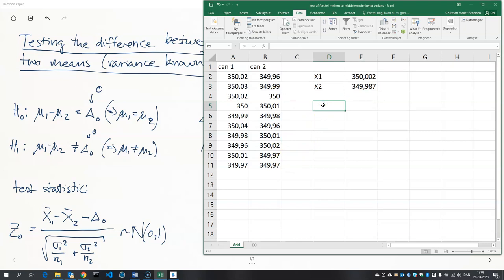We also need the variances or the standard deviations, and in our case it's the same. Just to make it more general, I'll write it as two different standard deviations, and the same thing goes for the sample sizes. They're the same in our case, but they don't have to be in general.